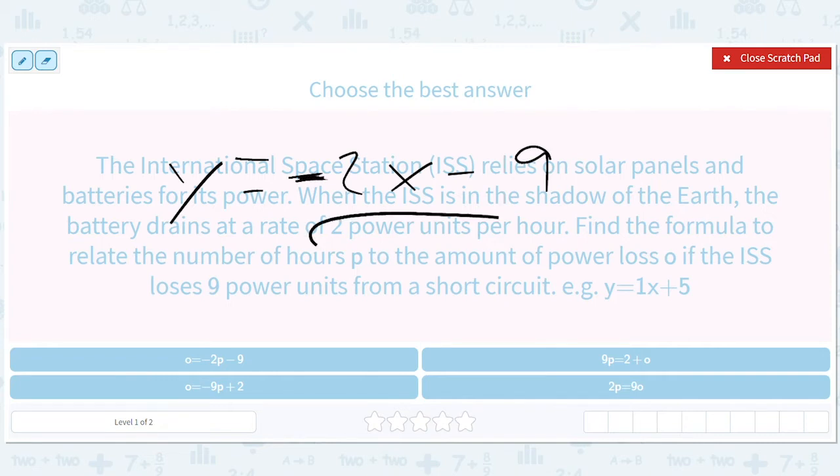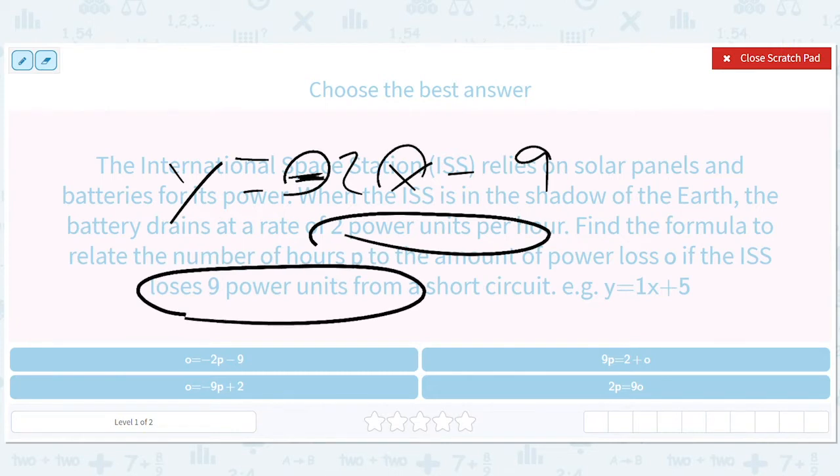So y equals negative 2x minus nine. You're losing two per hour, so that's where this minus two comes in. And you start off down nine, right? So at time zero, if you put in zero here, you're already down nine. So negative two variable minus nine.